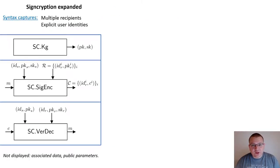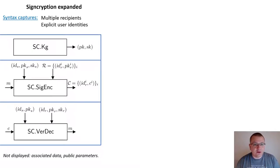We expand the standard syntax of a signcryption scheme to the multi-recipient setting, and we pass user identities as explicit inputs to some of the algorithms. The key generation algorithm produces a key pair usable with any user identity. The signcryption algorithm SIG-ENC takes a plaintext message, the identity and key pair of the sender, and a set of recipients' identities and public keys, returning a set of ciphertexts where each ciphertext encrypts the plaintext for a distinct recipient. The unsigncryption algorithm VER-DEC takes the ciphertext, sender's identity and public key, and the recipient's identity and key pair, returning the decrypted plaintext.